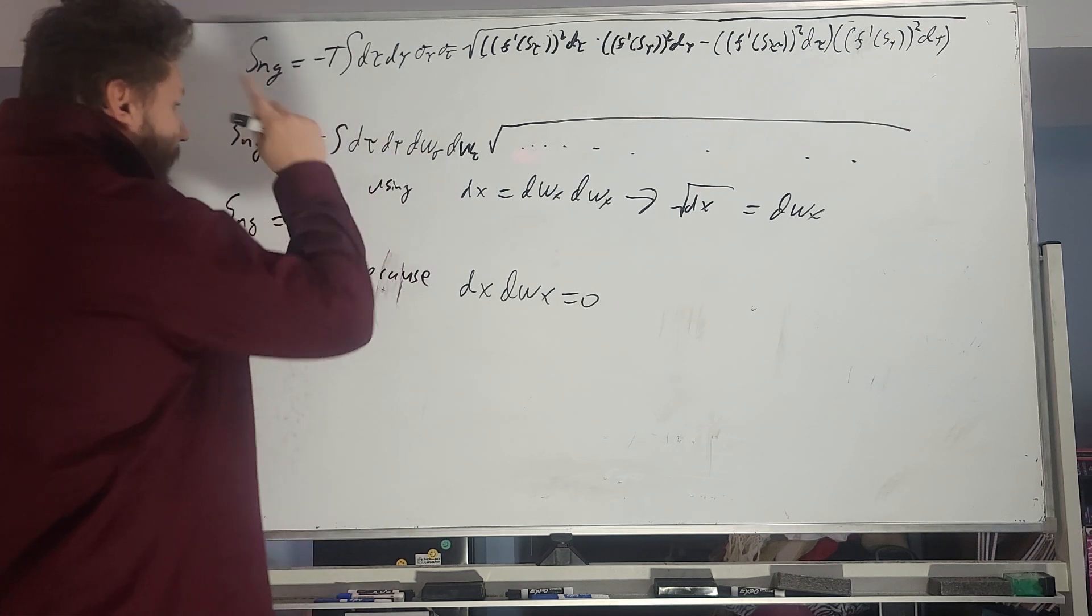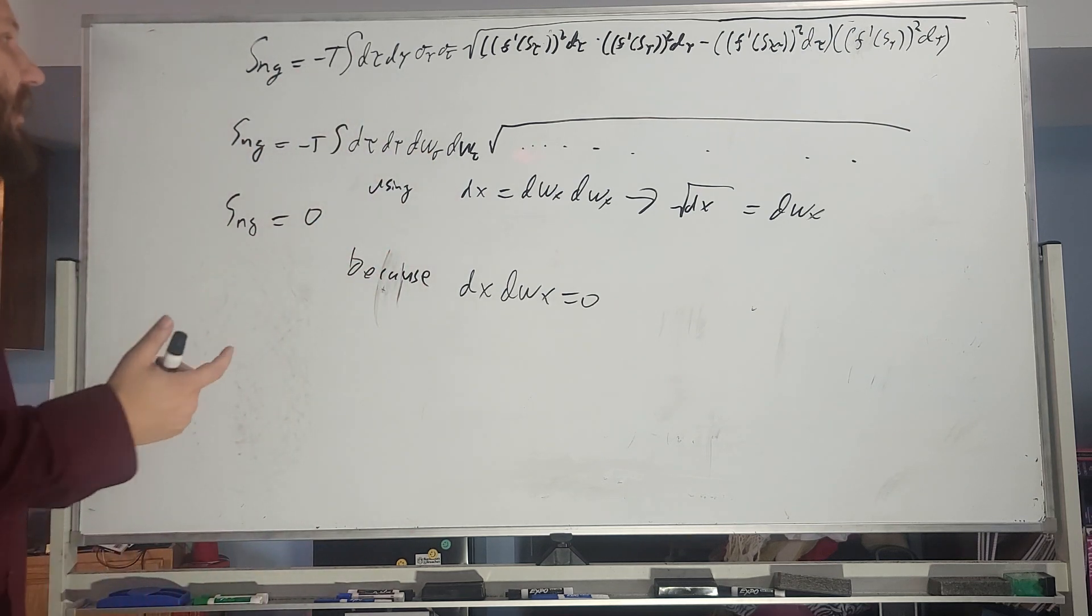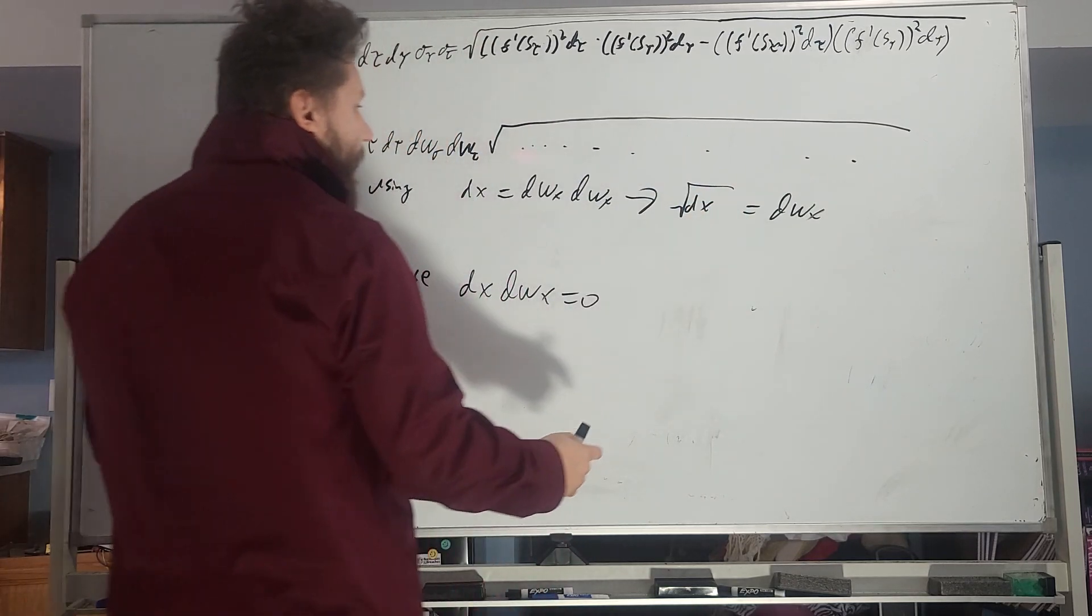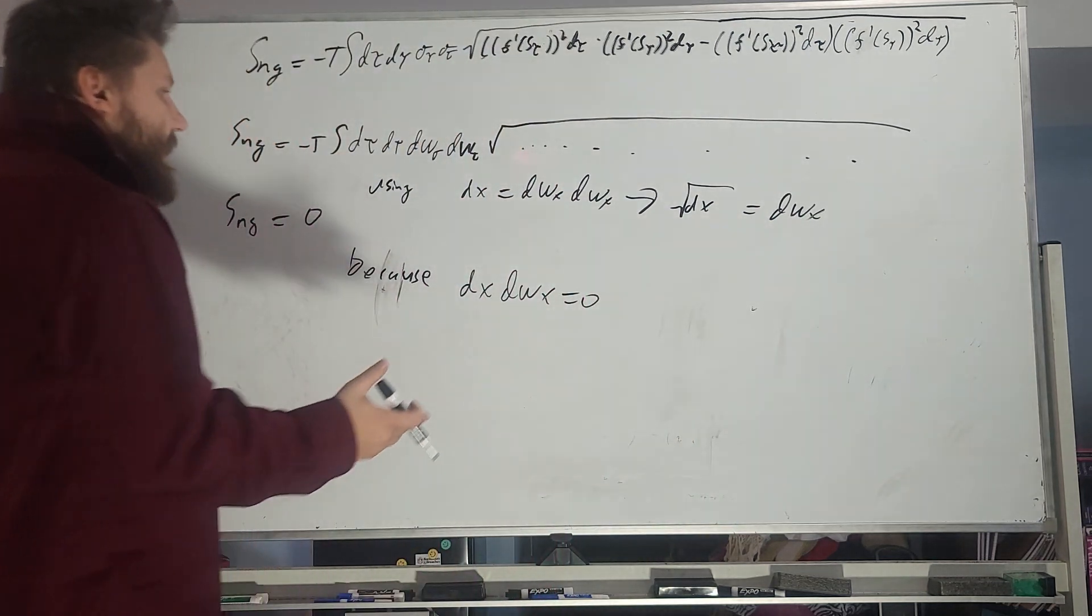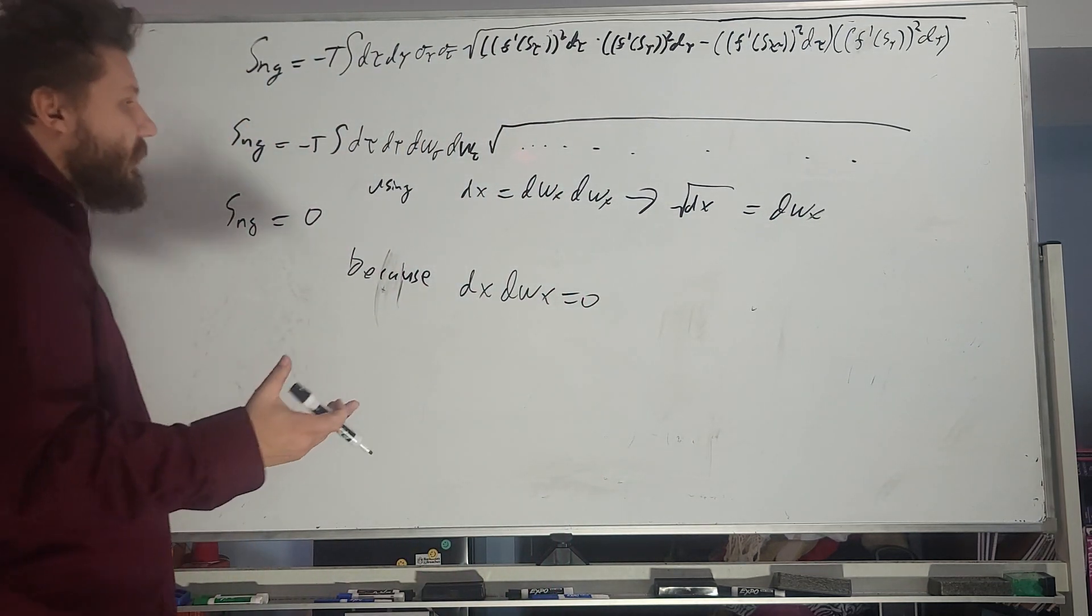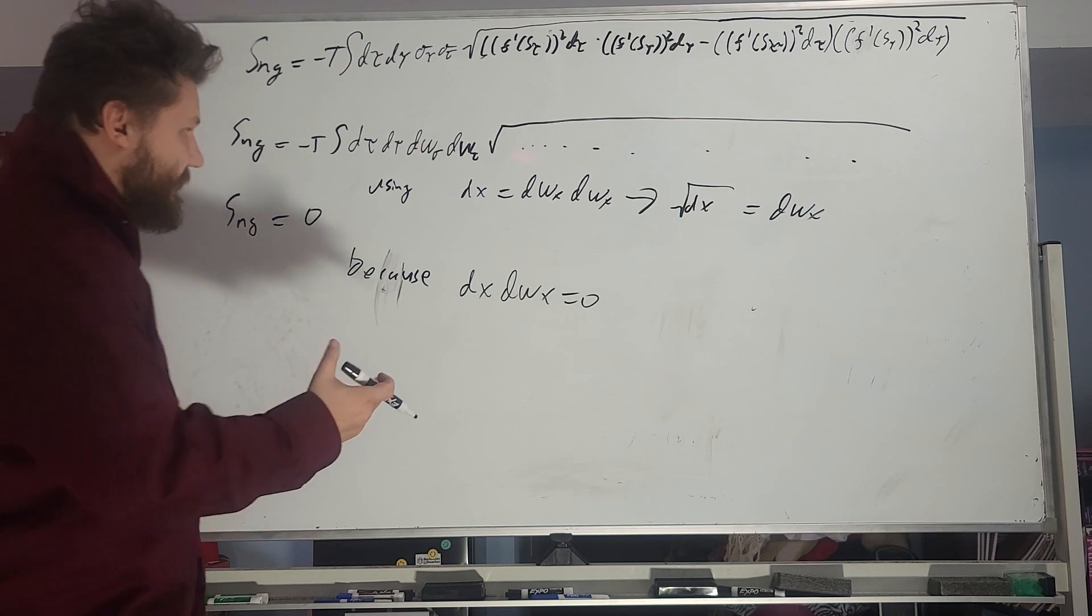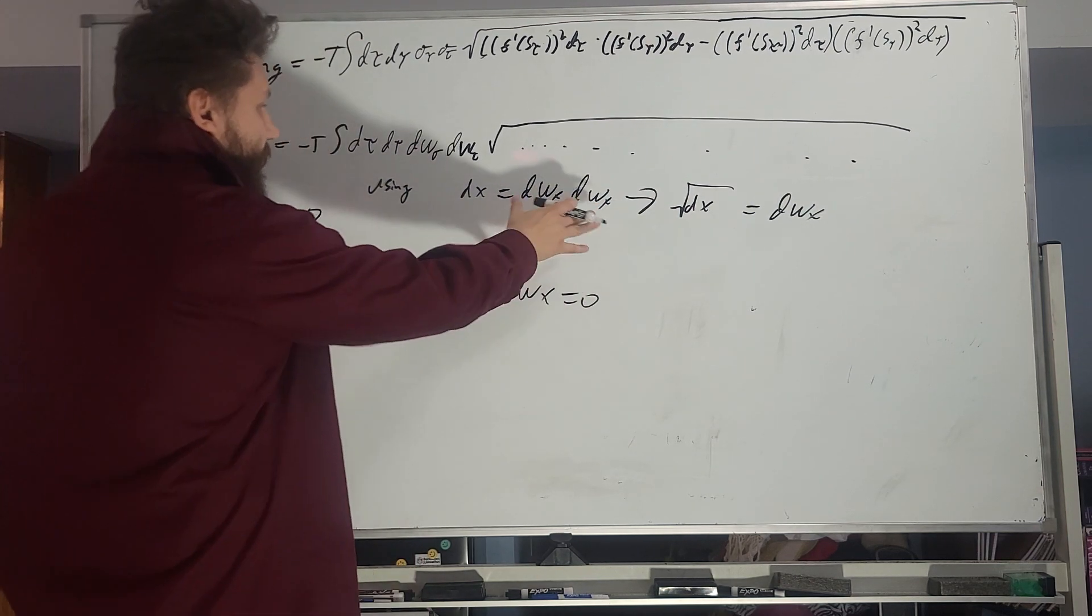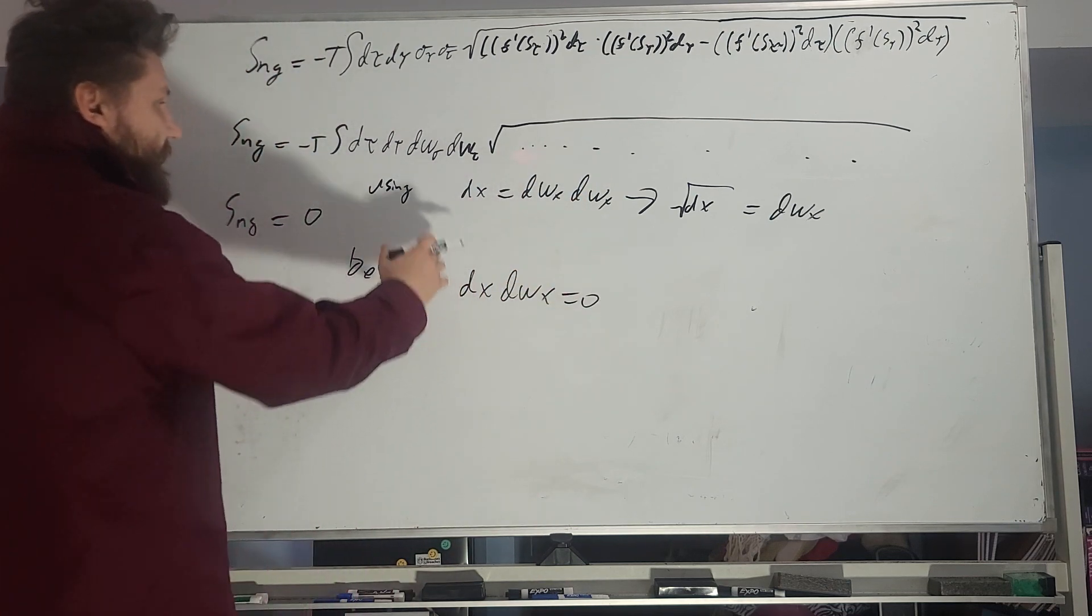And then what we have to do is kind of think of DX root as DWX, okay? So why is this the case? Because more or less, in the world of stochastic calculus, DX equals DWX, DWX. These are the Wiener processes, and take the square root of both sides. You kind of get this representation right here.